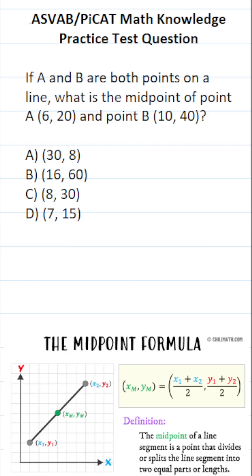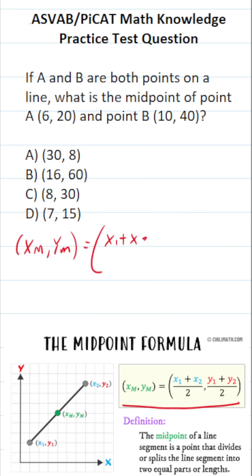The midpoint formula is down here if you need it. But this one is pretty easy to solve intuitively. X of M — that is the midpoint of X — and Y of M — that is the midpoint of Y — is going to be equal to (X1 plus X2) divided by 2, and (Y1 plus Y2) divided by 2.